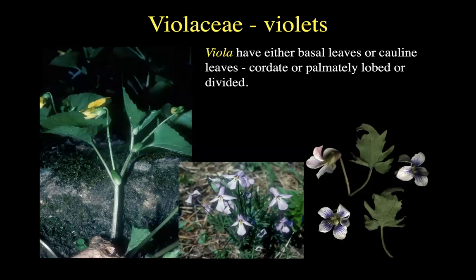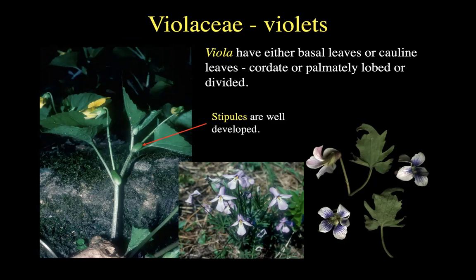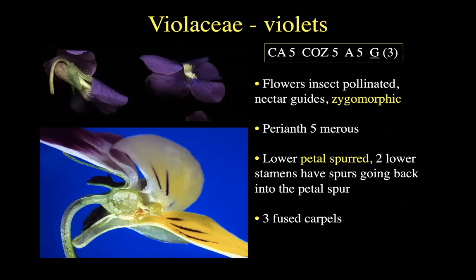There are lots of species of Viola in North America — again, a pretty hard group to key out. One of the key features is whether the leaves are all basal coming from the base, or whether there are cauline leaves along a main stem. Then consider the lobing on the leaves — is it cordate with a heart-shaped base, or palmately lobed or divided? This is like a little sandy prairie violet with highly palmately lobed leaves. Very obvious stipules in violets.